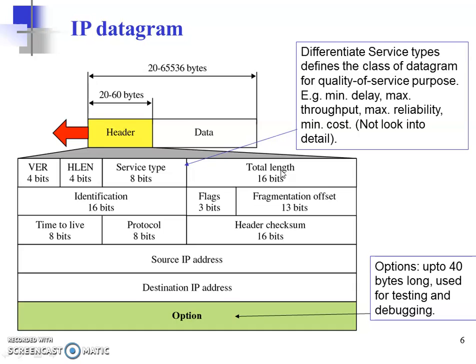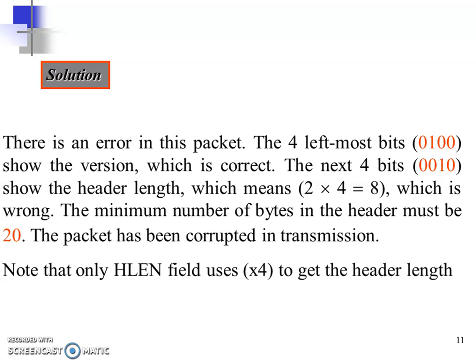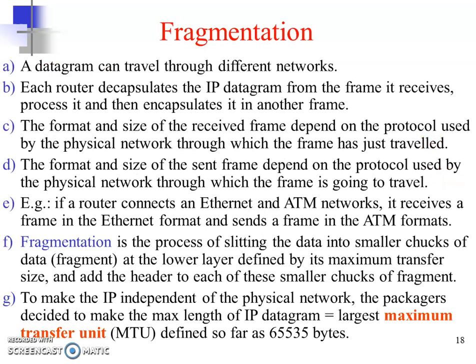The next 3 fields are very important as far as the process of fragmentation is concerned — the fields called identification, flags, and fragmentation offset. These 3 fields are very important for the purpose of fragmentation. Now let's understand what fragmentation means.